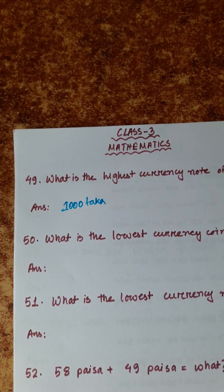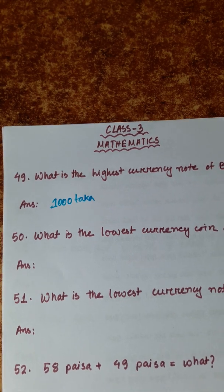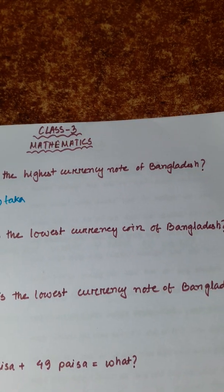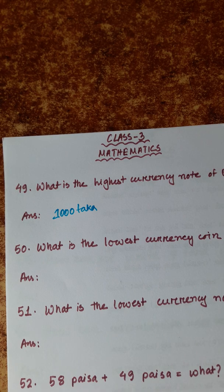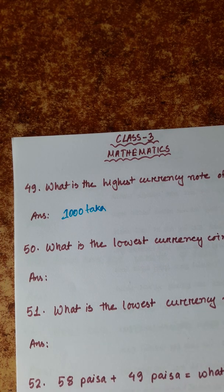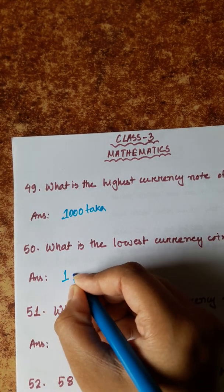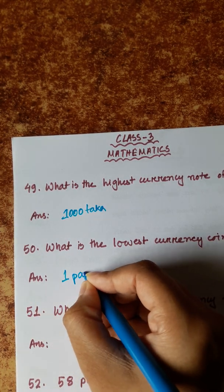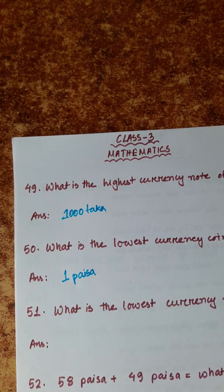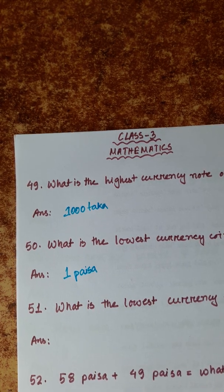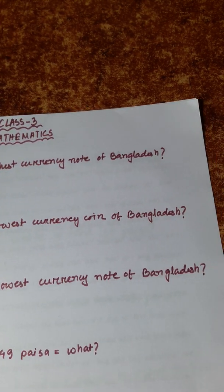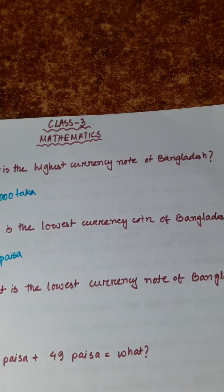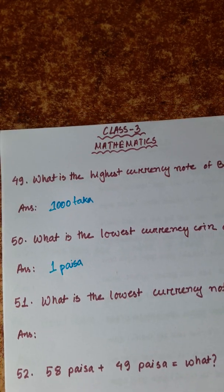Number 50: What is the lowest currency coin of Bangladesh? The lowest currency coin of Bangladesh is 1 paisa. Number 51: What is the lowest currency note of Bangladesh? The lowest currency note of Bangladesh is 1 taka.